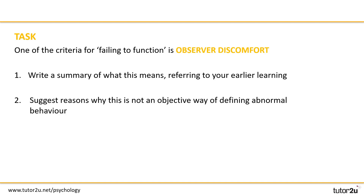One thing that may affect your decision about objectivity is observer discomfort. For this task, let's revisit what it means and suggest specific reasons why this isn't an objective way of defining abnormality. Pause the video here for 10 minutes while you write your summary and then suggest reasons why it's not objective.